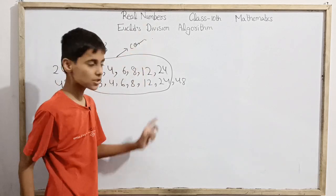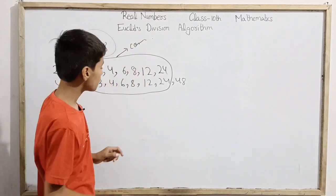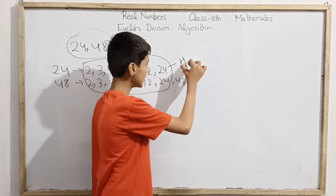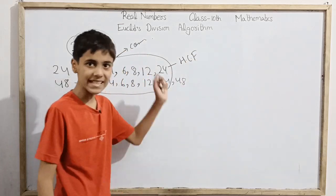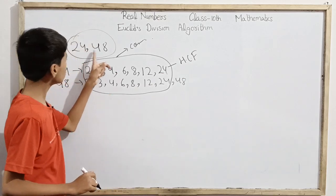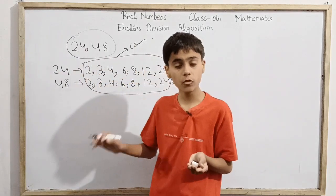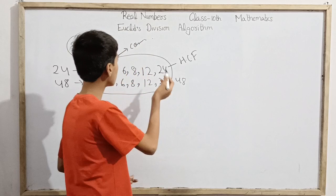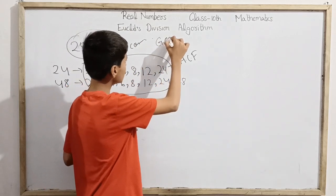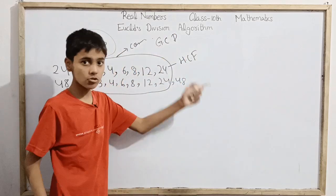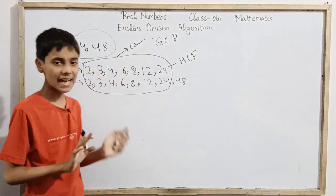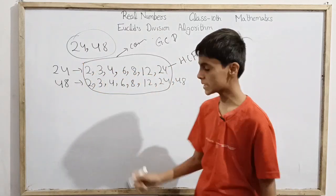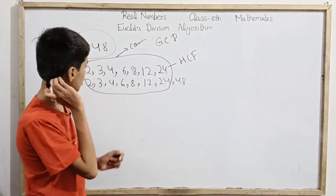The greatest common divisor is 24 itself. We call this HCF, which is Highest Common Factor. Common factors are the same thing as HCF. HCF is also called GCD, that's Highest Common Factor or Greatest Common Divisor.